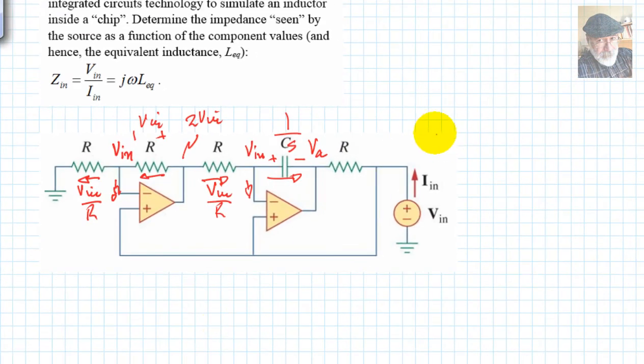And the voltage at this point, I'm going to call that Va, can be computed. Let me write that. Va is V input, this voltage here, minus a drop in the capacitor, which is V input, this voltage and the current V input divided by R multiplied by the impedance 1 over Cs. That is that voltage.